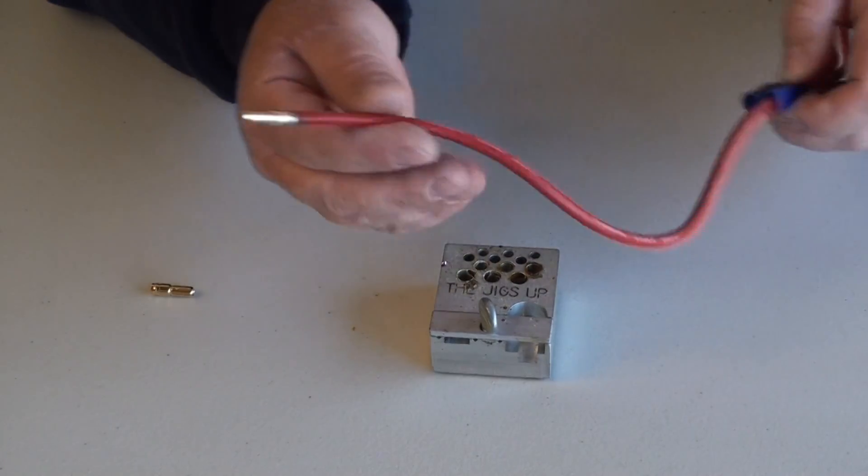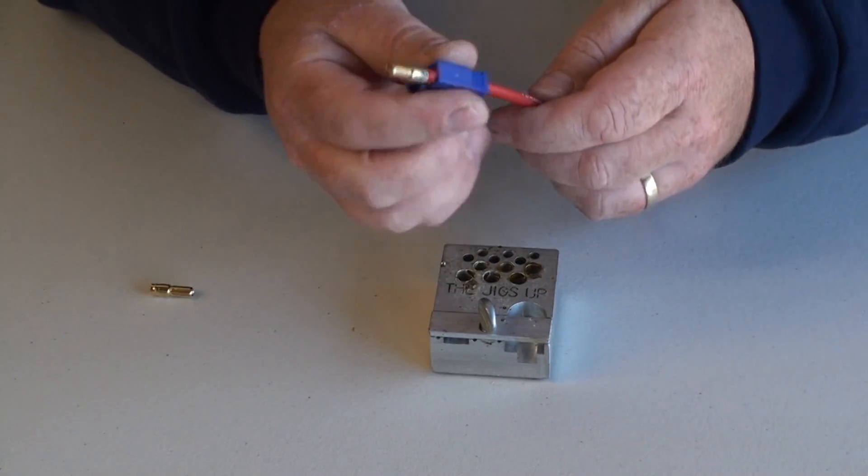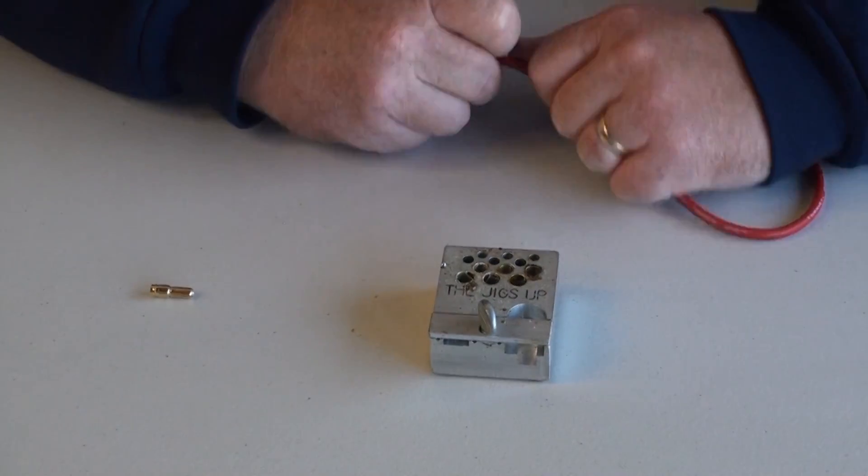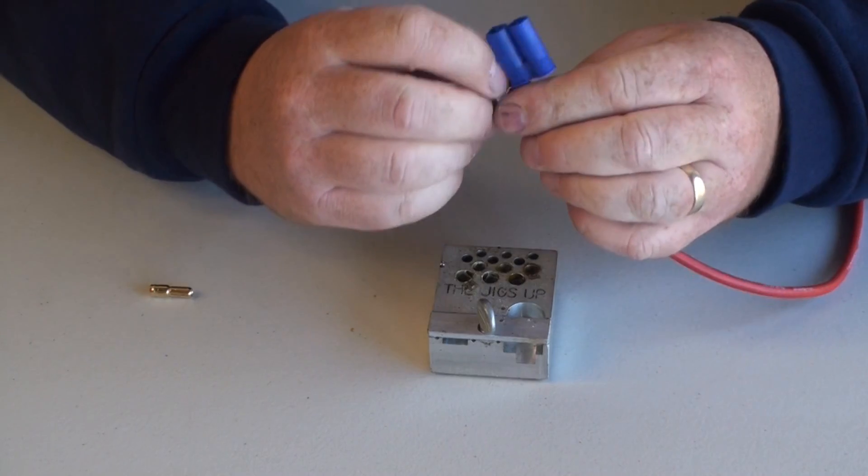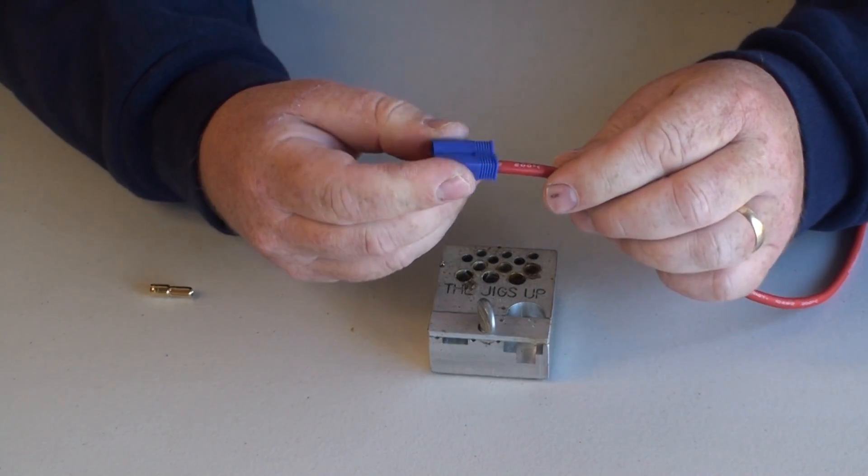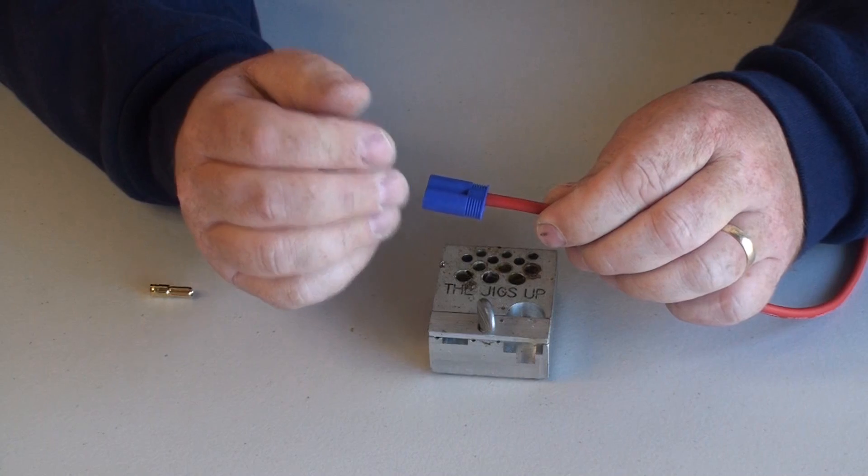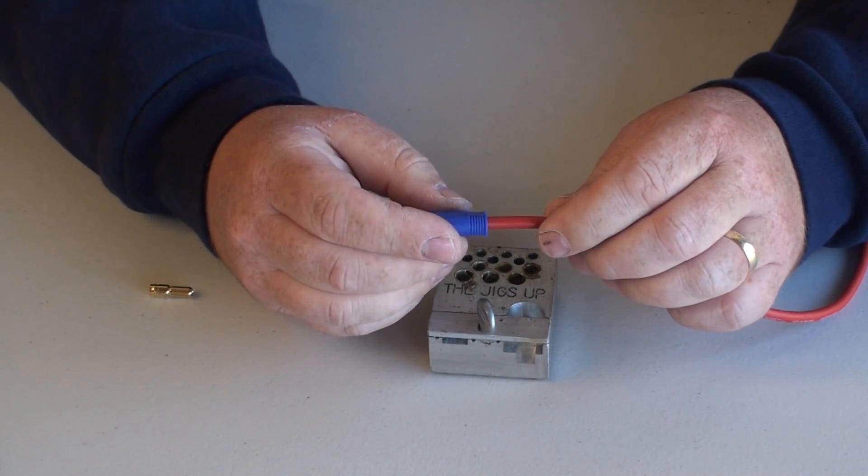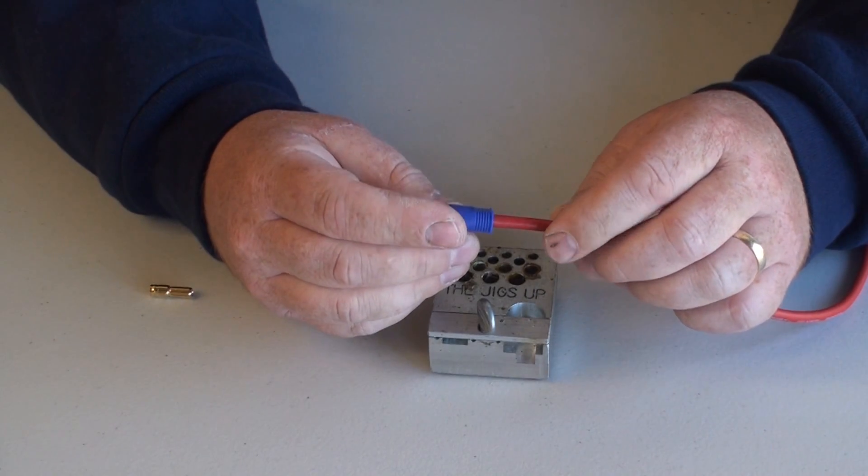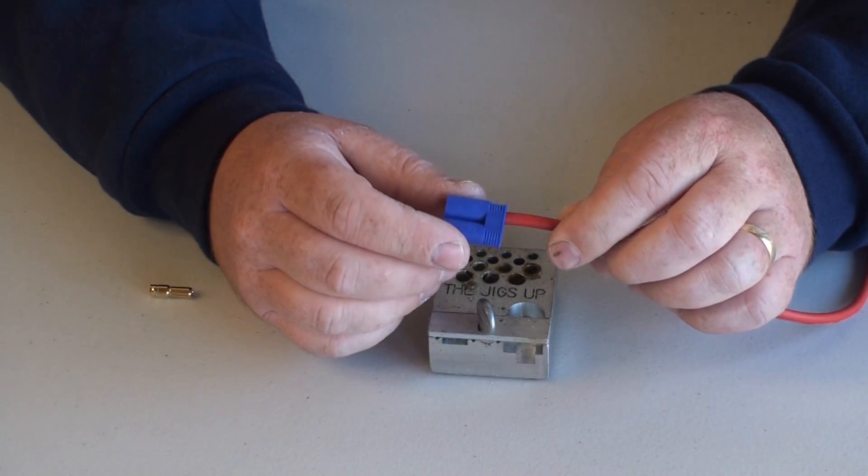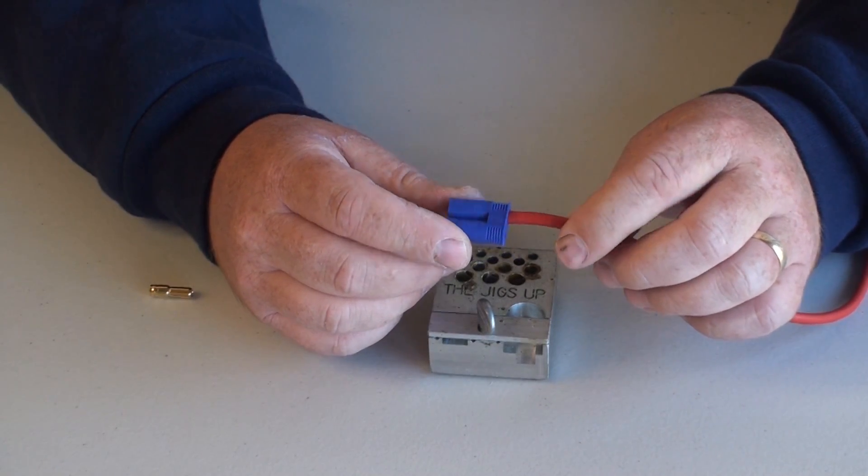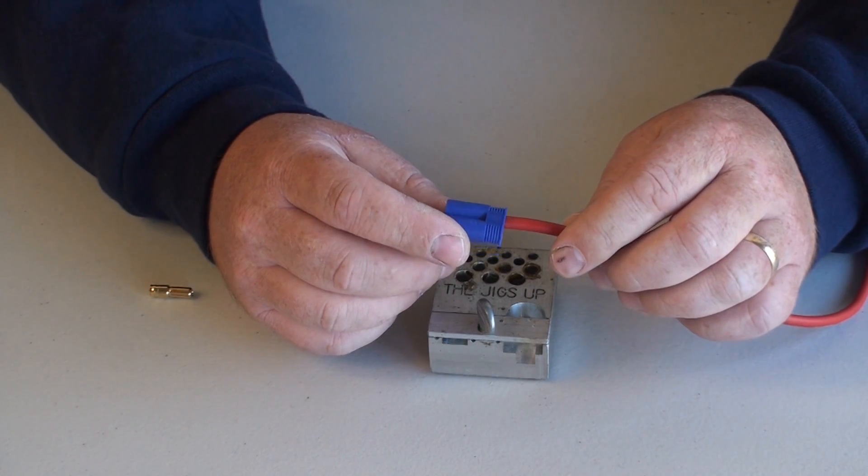Next, simply pull the lead back through the connector, and it will snap into place. Now simply repeat for the negative, and then you'll have your two finished connectors. It really helps to pull the brass connector back into the plastic block while it's still warm. It makes that job much easier.